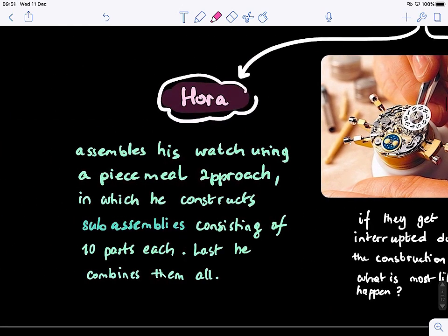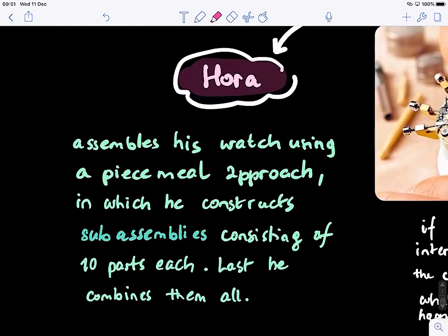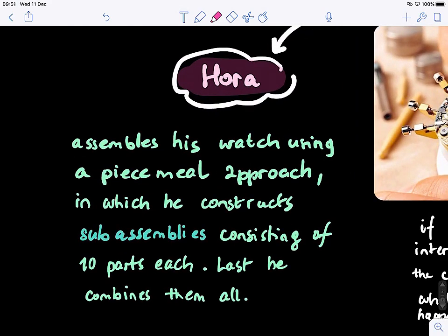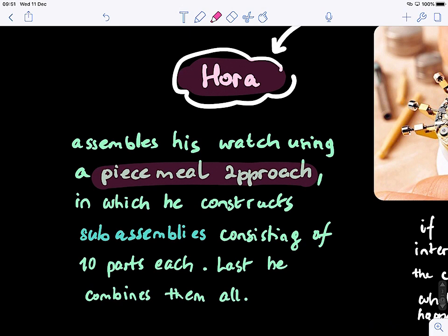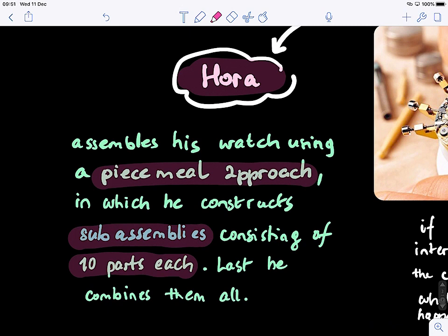Hora, on the other hand, assembles his watch using a piecemeal approach in which he constructs sub-assemblies consisting of 10 parts each. He will combine them all in the watch. So he breaks down a big task into sub-tasks, solve each sub-task independently, and then aggregates them together to find the solution.